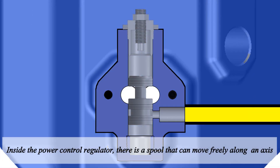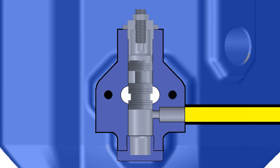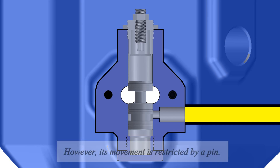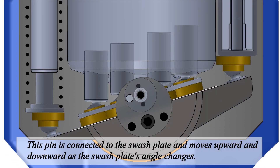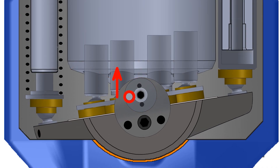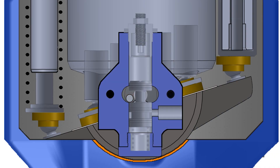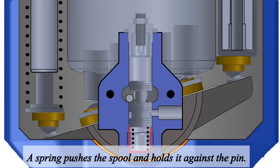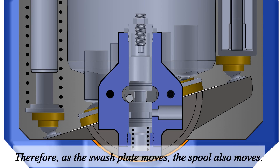Inside the power control regulator, there is a spool that can move freely along an axis. However, its movement is restricted by a pin. This pin is connected to the swashplate and moves upward and downward as the swashplate's angle changes. A spring pushes the spool and holds it against the pin. Therefore, as the swashplate moves, the spool also moves.